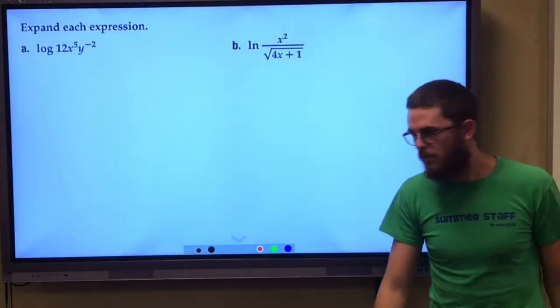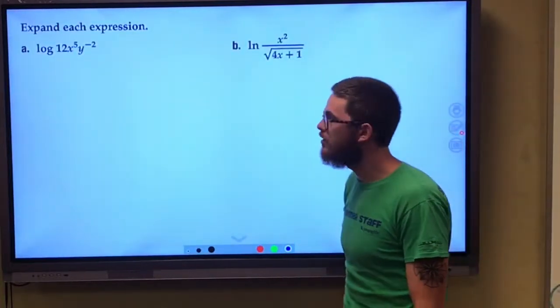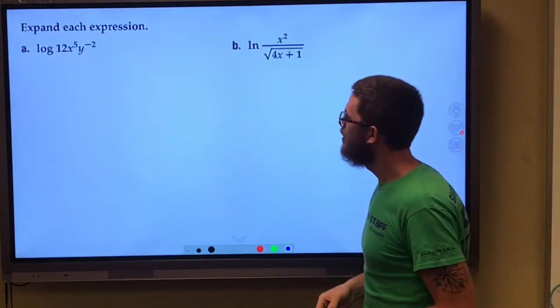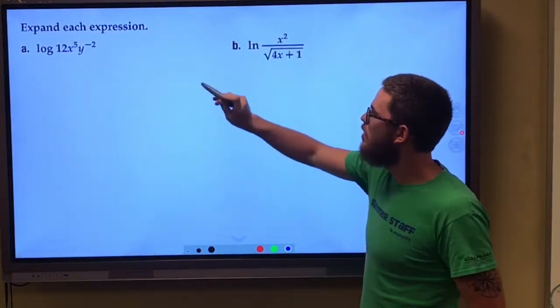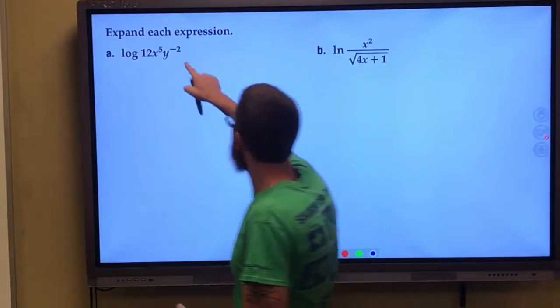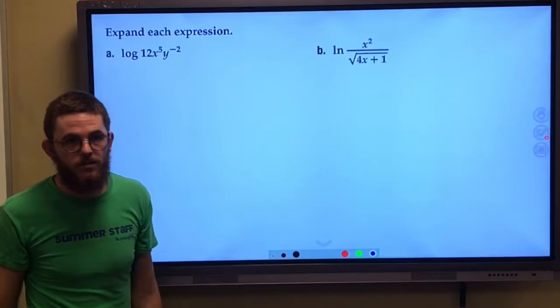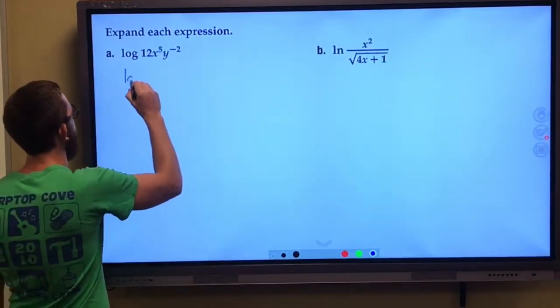Let's look at expanding some logarithms. We basically want to, in a way, simplify them. So, first thing I see is we've got this y to the power of negative 2. I like to undo negative exponents quickly. Let's go ahead and get that out of the way.